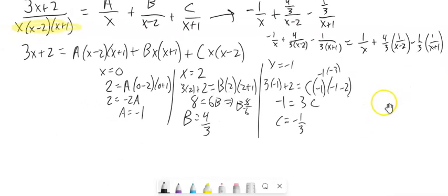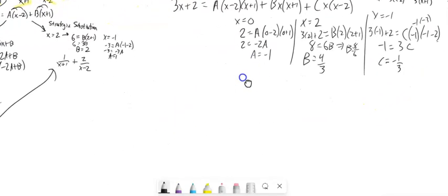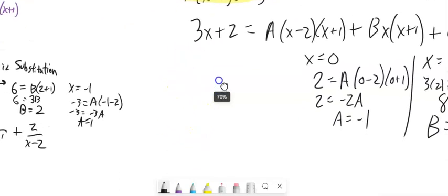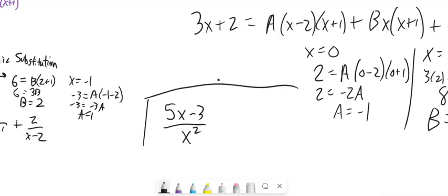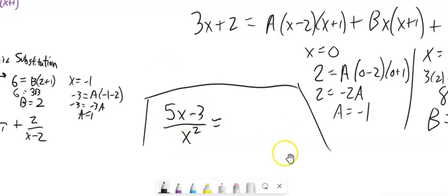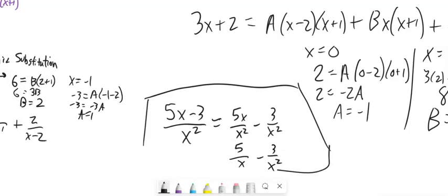So there is that basic method. Before we go further, don't forget what you know. You learn a new technique and it's easy to want to apply it to everything. But if your fraction already simplifies nicely — for instance, if you just have one term in the numerator over x times x, you can cancel the x. So you'd get 5 over x minus 3 over x squared, nothing fancy required.